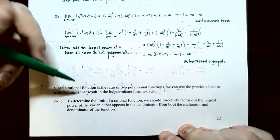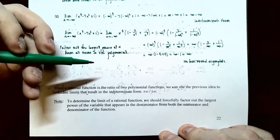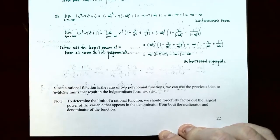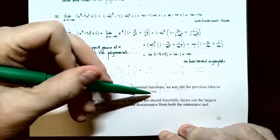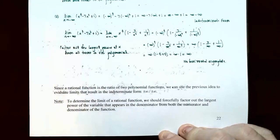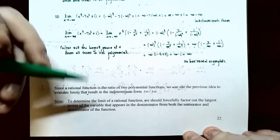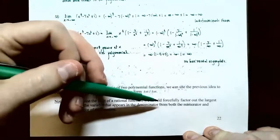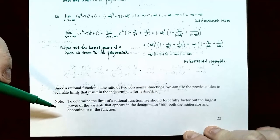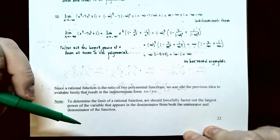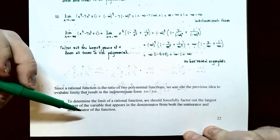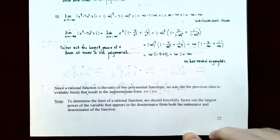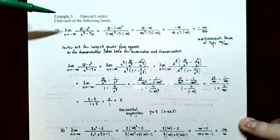Since rational functions are the ratio of two polynomial functions, we can use this same idea to evaluate limits of rational functions that give indeterminate forms where the numerator and denominator are both plus or minus infinity. In the next example, we will factor out the largest power of the variable that appears in the denominator from both the numerator and denominator polynomials. Example 5, special limits: find each of the following limits.